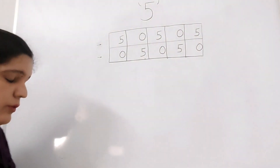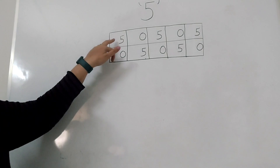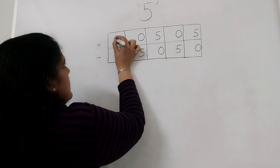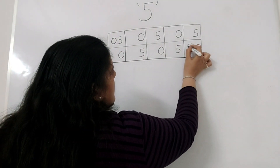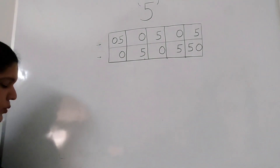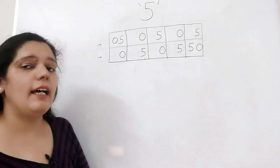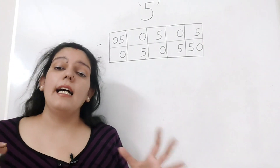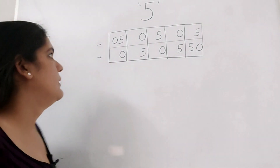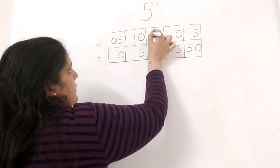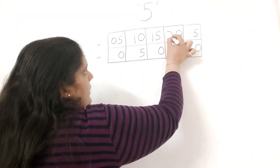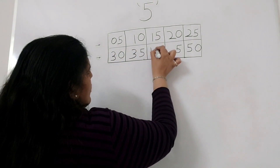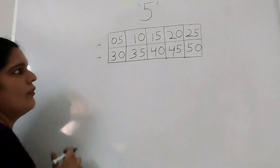Next, for the tens place, I will write a 0 in the first column and 5 in the last column. For the other columns, we will have pairs of 1, 2, 3 and 4 — that is, I will be writing each number twice on the tens place: 1, 1, 2 and 2, 3 and 3, 4 and 4. And here is our 5 times table ready.